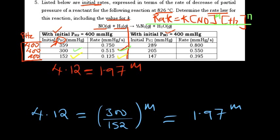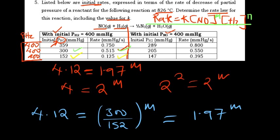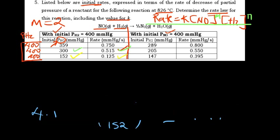So we have 4.12 = 1.97^M. We can round 1.97 to 2, so 4 = 2^M, which gives 2² = 2^M, therefore M = 2. The reaction is second order with respect to nitrogen oxide.